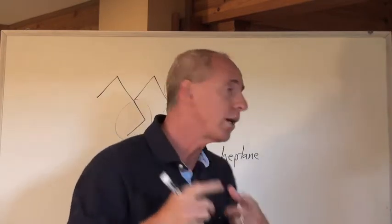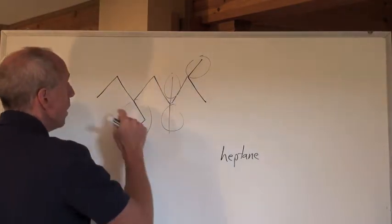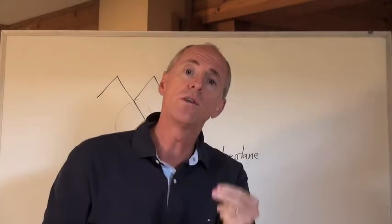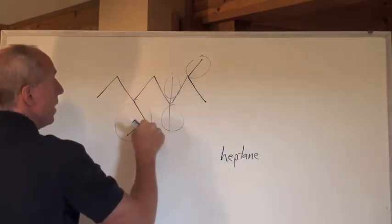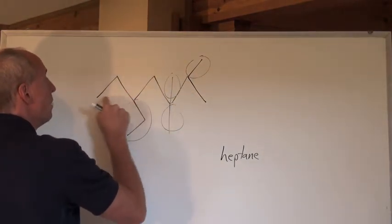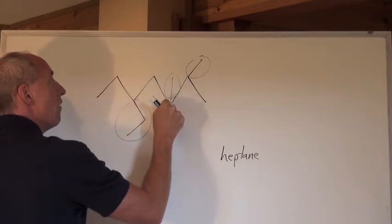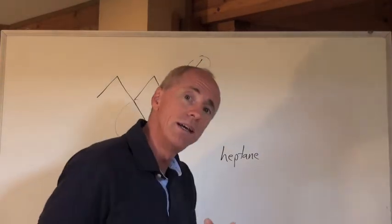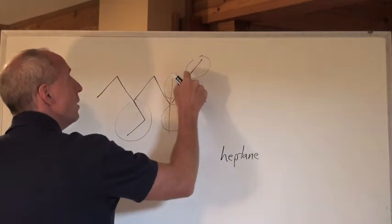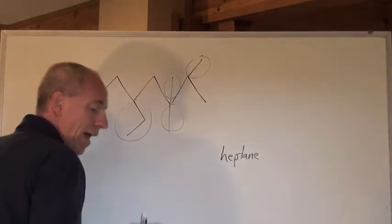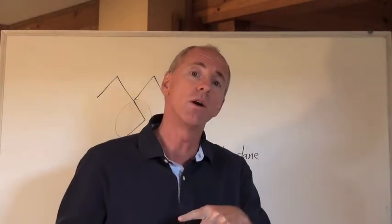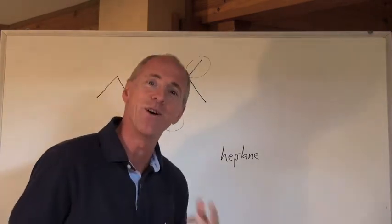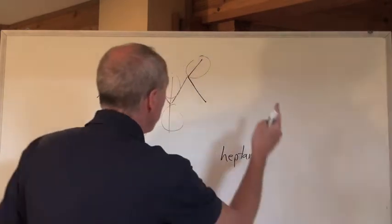Now how do we actually name this? We have to decide whether to number the branches from left to right or right to left — whichever gives us the lowest numbers possible. Going left to right, the branches would be on carbons three, five, five, and six. Going the other direction gives us two, three, three, five — and two, three, three, five is lower than three, five, five, six.